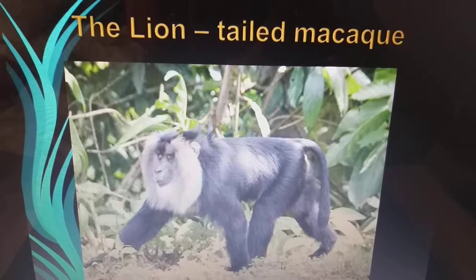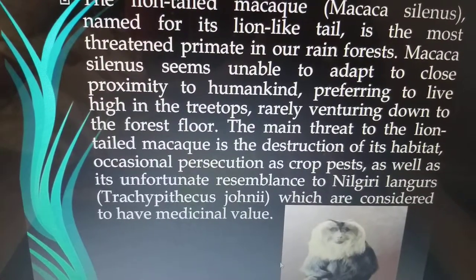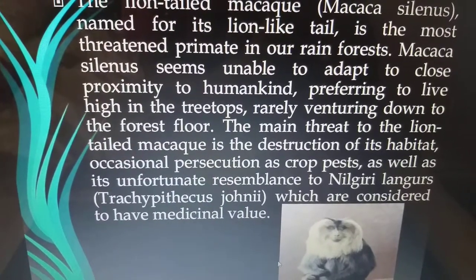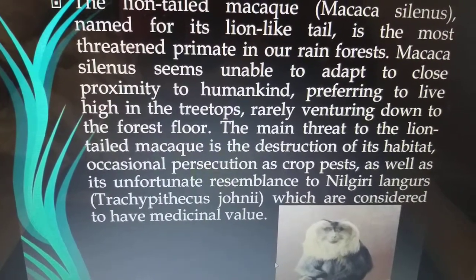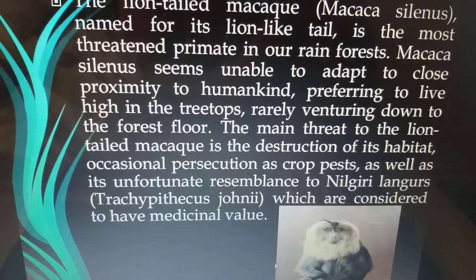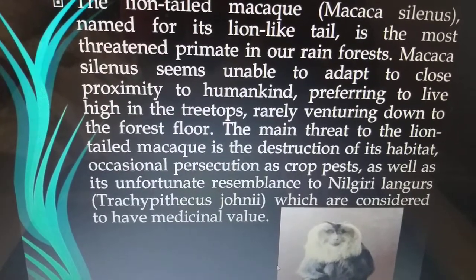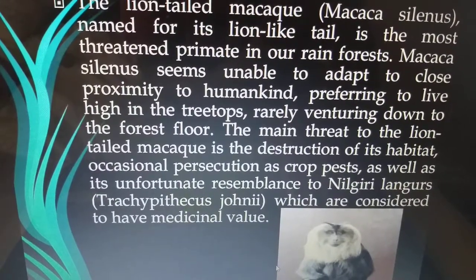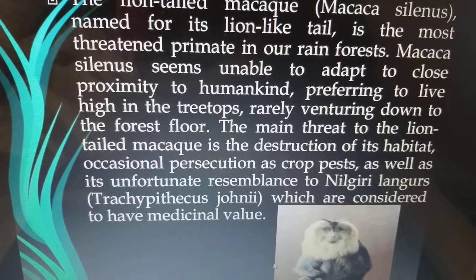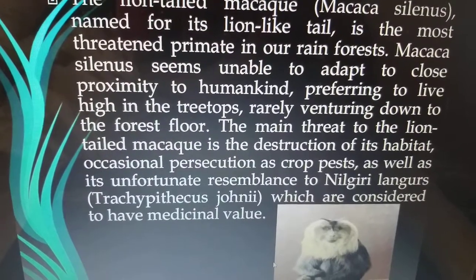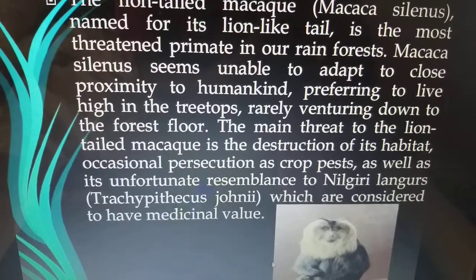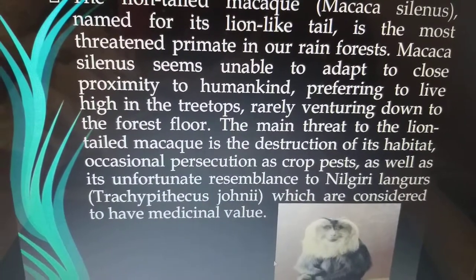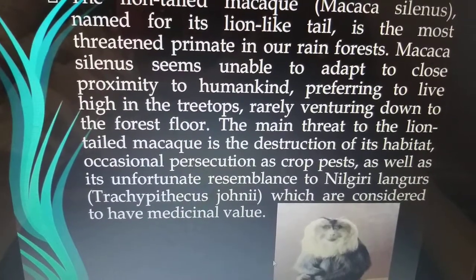Next is the lion-tailed Macaque, so named from its lion-like tail. It is the most threatened primate in our rainforests. The Macaque seems unable to adapt to close proximity to humankind, preferring to live high in the treetops and rarely venturing down to the forest floor. The main threats are destruction of its habitat, occasional persecution as a crop pest, and poaching for its perceived medicinal value.